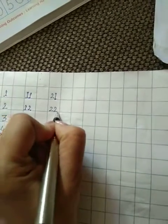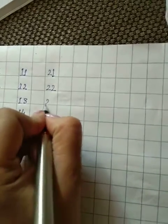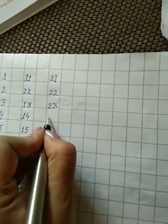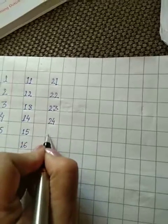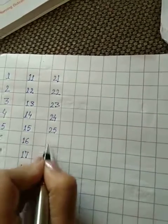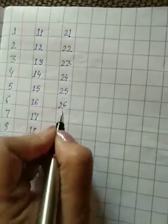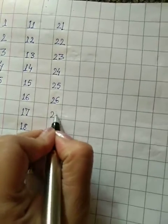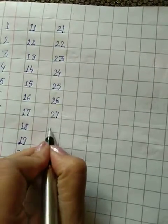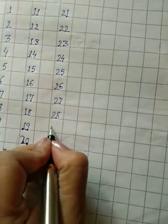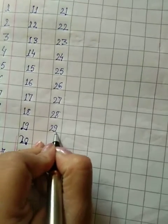Then 2, 2, 22. 2, 3, 23. 2, 4, 24. 2, 5, 25. 2, 6, 26. 2, 7, 27. 2, 8, 28. 2, 9, 29.